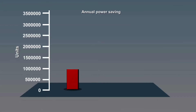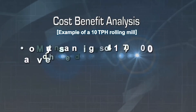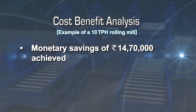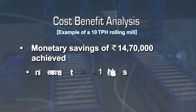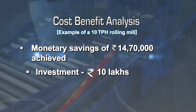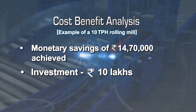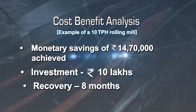The increase in productivity leads to an annual saving of power by 2,10,526 units, thus monetary savings of 14,70,000 rupees can be achieved. The investment required for installation of Y-table and repeater is approximately 10 lakh rupees, which can be recovered in 8 months.